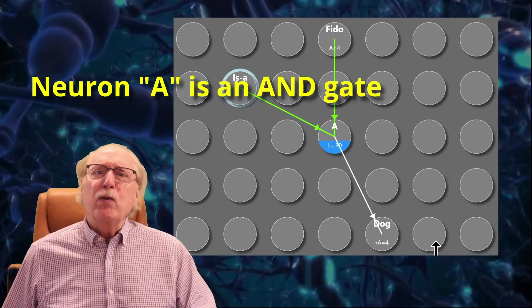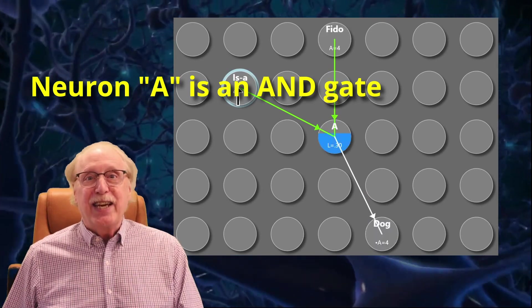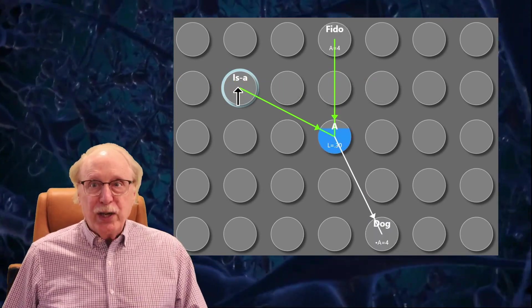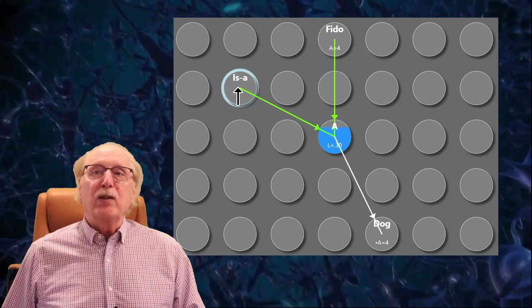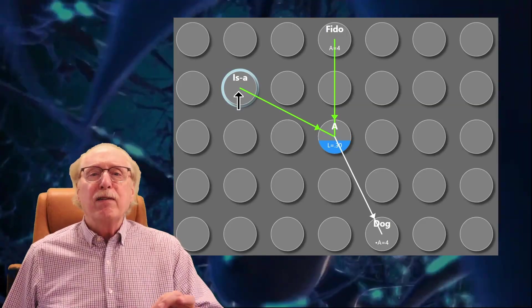For those of you with a logic background, neuron A is acting as an AND gate. You can imagine how these connections are made via Hebbian learning as I described in the previous video, but we'll go into more details in the future.